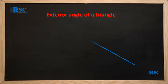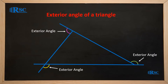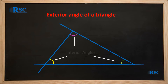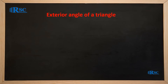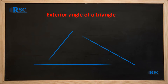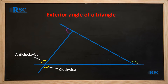If we extend the side of a triangle, the angle created between the extended side and the next side of the triangle is called an exterior angle. A triangle therefore has three interior angles and three exterior angles. The exterior angles are formed by extending each side, moving either in a clockwise direction or an anticlockwise direction.